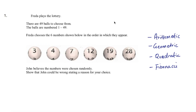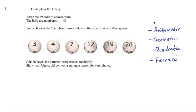Now if you just skimmed over this question you might think this would be a probability question, because you see the word lottery and so there might be something involving probability there. But actually what we're looking for is to show that this sequence of numbers has some pattern, and so to show that the numbers have a pattern we need to use our knowledge of sequences. This is actually a sequences question, and in GCSEs there are four types of sequences you need to be familiar with.